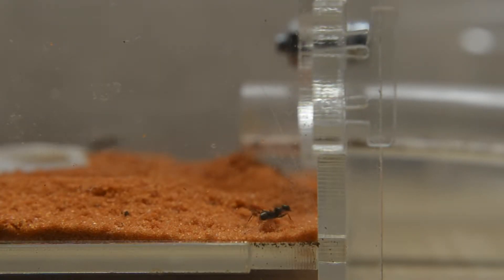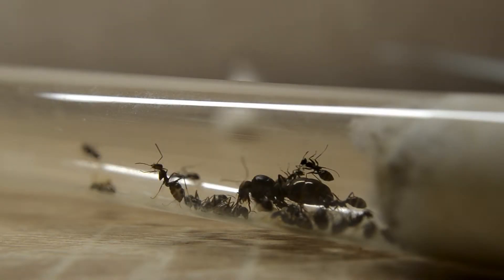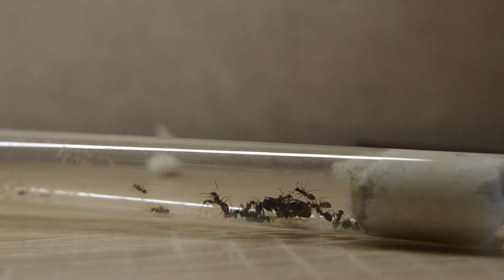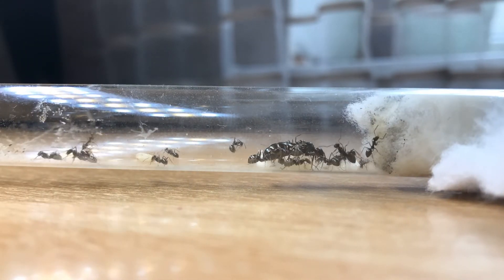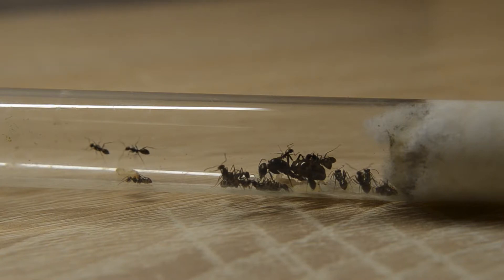All the ants in the incubator froze with fear - they always do this when they feel some rustle. At first they were afraid to enter the new arena, and those workers who were transferred manually did not know where their entrance to the nest was. But then everyone found everything they needed.